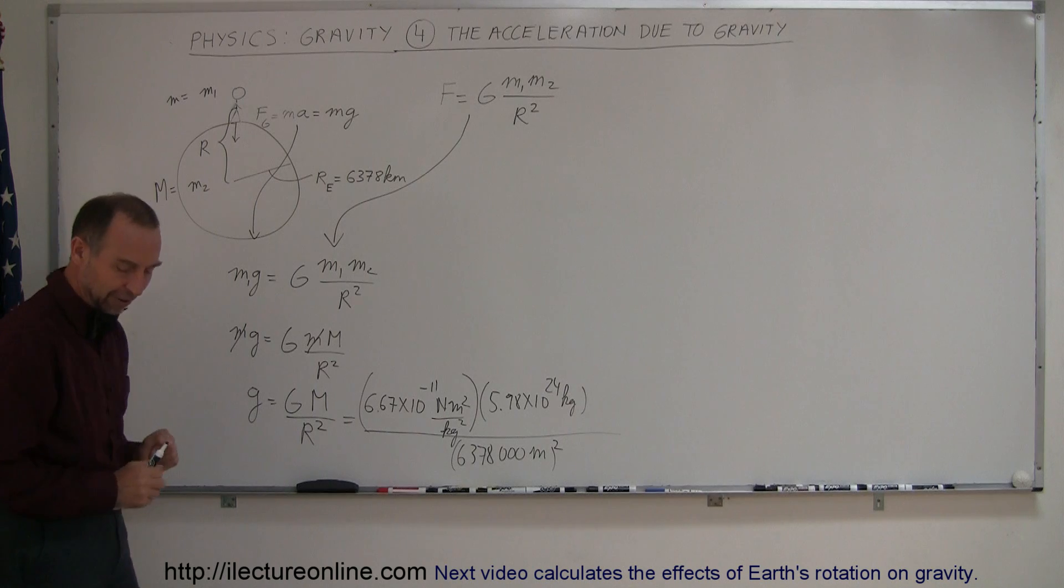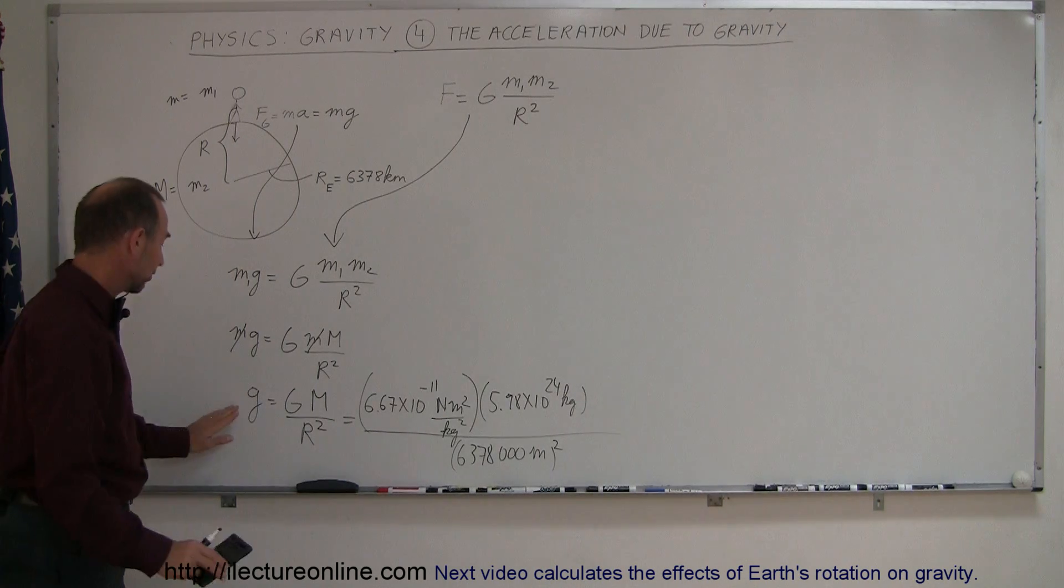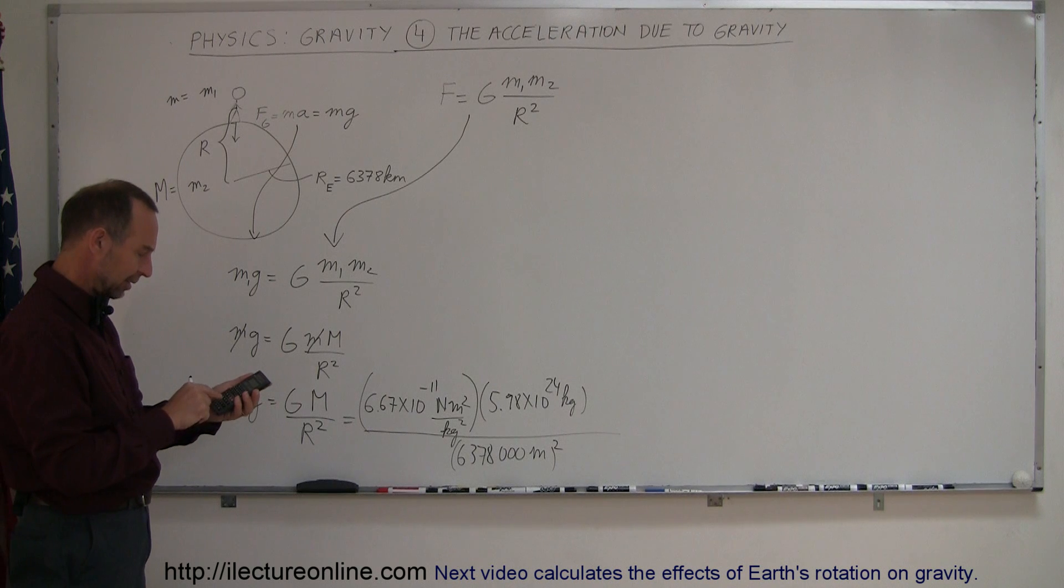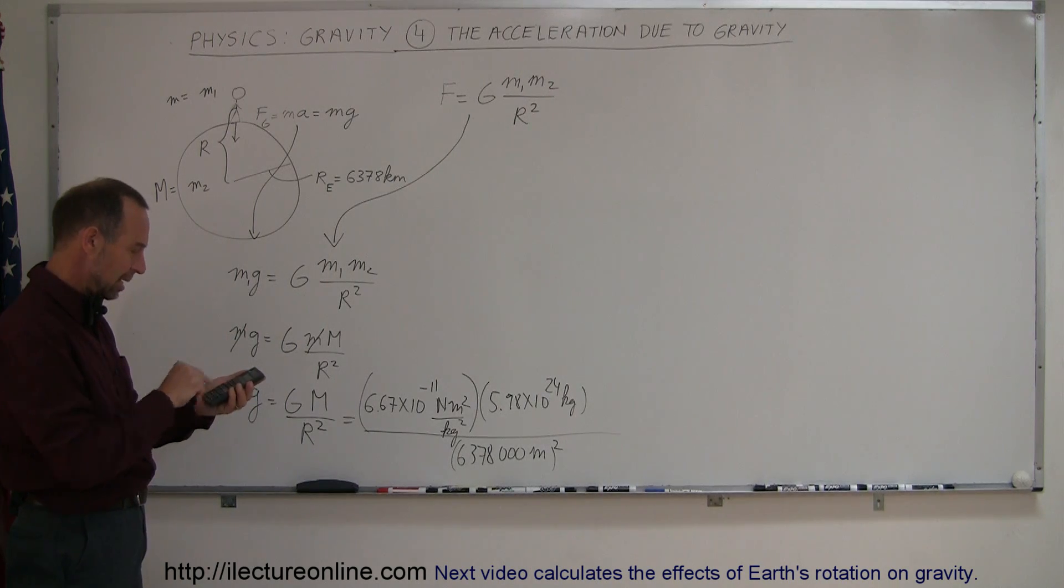But for now, we want to verify the acceleration due to gravity on the earth's surface. So let's plug those numbers into our calculator. 6.67 e to the minus 11 times 5.98 e to the 24th, divided by 6,378,000 squared, equals,